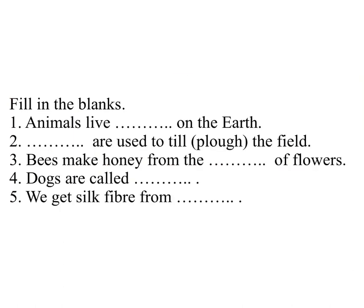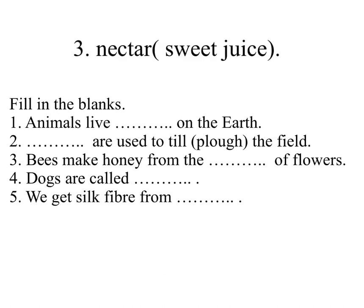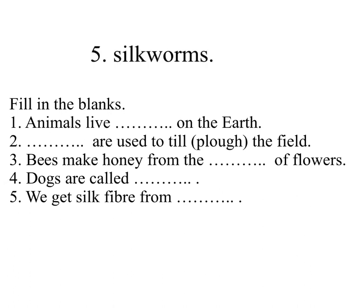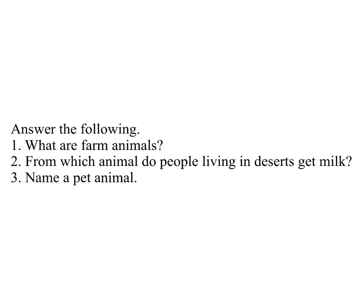Down 9: An animal found in the Himalayan mountains. Answer: Yak. Fill in the blanks: 1: Animals live everywhere on the earth. 2: Oxen are used to till and plow the field. 3: Bees make honey from the nectar of flowers. 4: Dogs are called man's best friend. 5: We get silk fiber from silkworms.